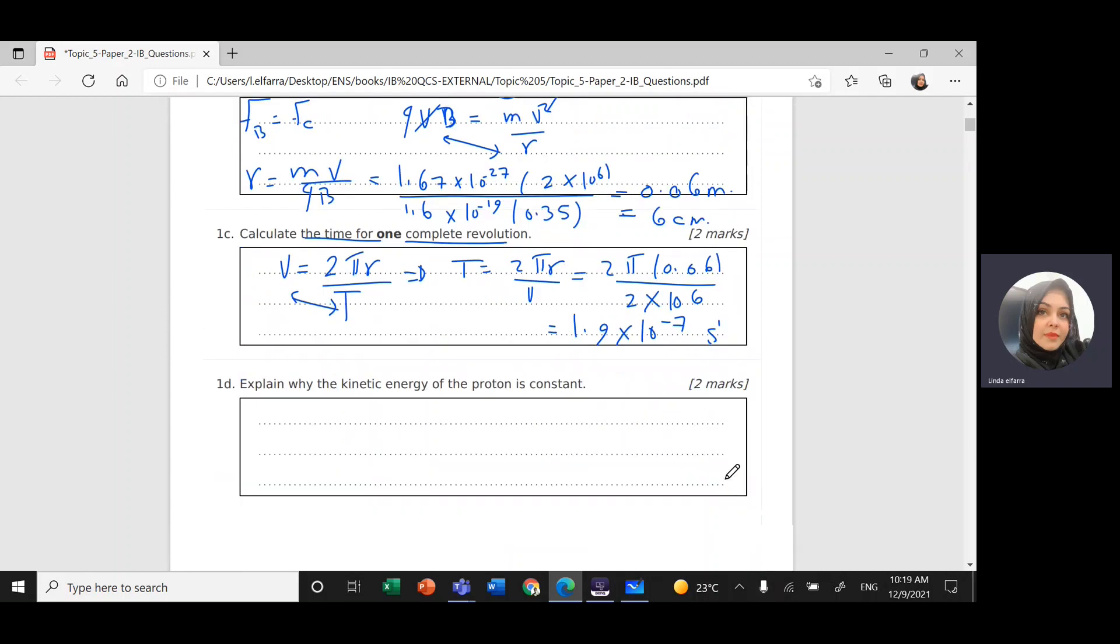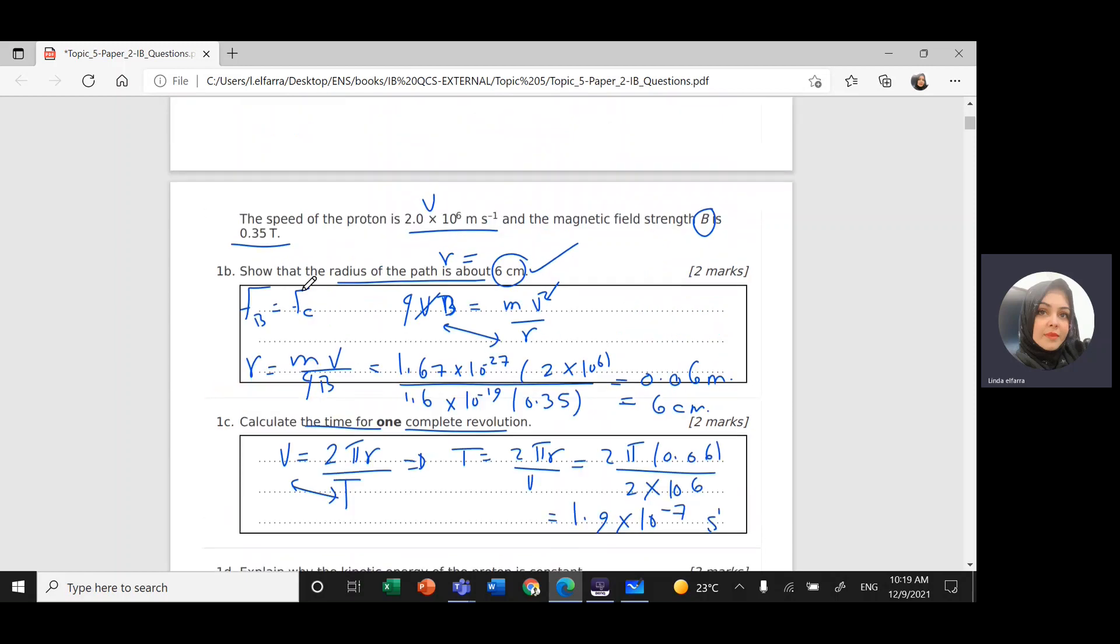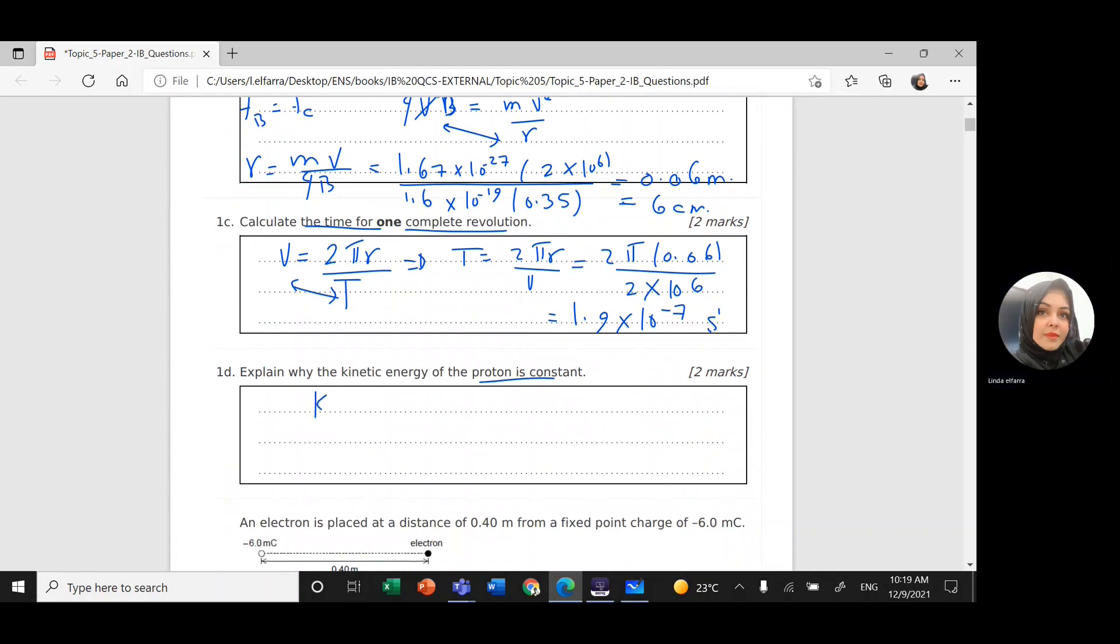Explain why the kinetic energy of the proton is constant. The question tells me the velocity is constant. If you go back here, the speed of this proton is moving with constant speed. And I know kinetic energy equals half mass times the velocity squared. If the velocity is constant, that means the kinetic energy also will be constant.